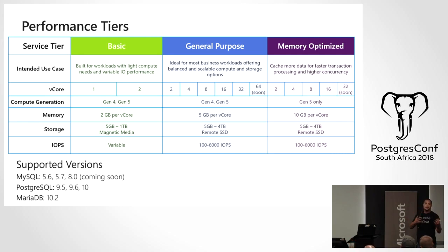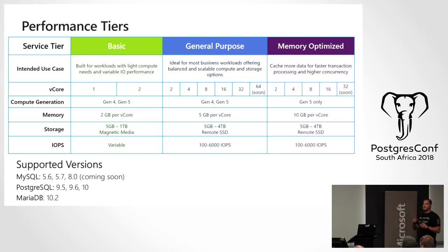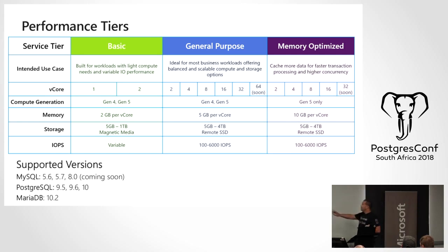You should use the query store to understand your workloads and build scripts so that when you reach certain thresholds, you can scale up to the appropriate tier. One consideration: if you span tiers there will be a bit of downtime because it has to move to a different subsystem. But if you increase within the same tier — for example, general purpose with 2, 4, 8, 16, 32, 64 cores — it's instantaneous.